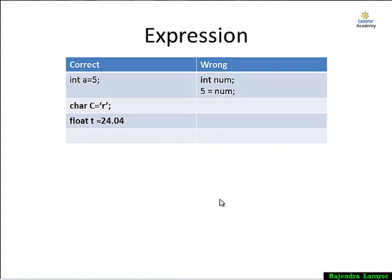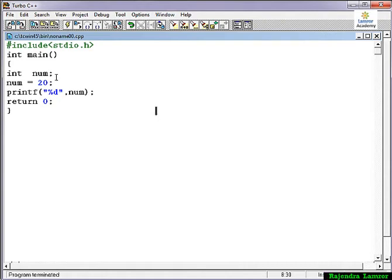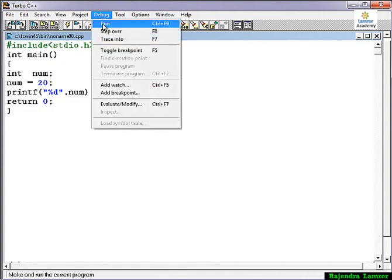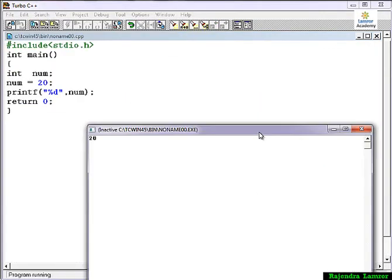So now I am showing you one example. How the R-value and L-value we are expressing and what you need to remember. See here, I am making the variable num equal to 20. Here I am printing the value of 20. So if I am running this program, it will give you correct 20 output.